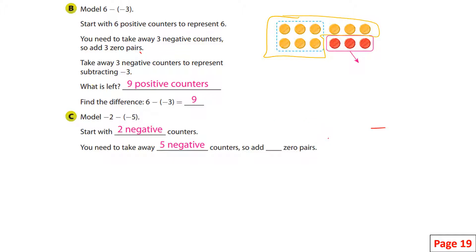I have two negative counters and I want to take away five negative counters, so we have to think about how many zero pairs we need. Right now I can take away these two, but I need three more negatives. So I have to add three more zero pairs — one negative, two, three — so I can take away five negatives altogether, but I have to add zero pairs.